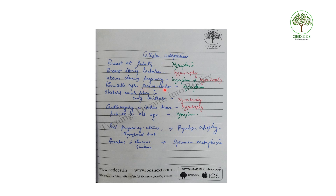Liver cells after partial resection undergo hypertrophy. Skeletal muscle fibers in bodybuilders or athletes — hypertrophy. Cardiomegaly — hypertrophy. Prostate in old age — hypertrophy. Post-pregnancy uterus and the thyroglossal duct undergo physiological atrophy. In the bronchus of chronic smokers, pseudostratified columnar ciliated epithelium may undergo squamous metaplasia. These are very important examples to remember.